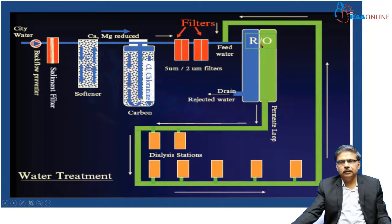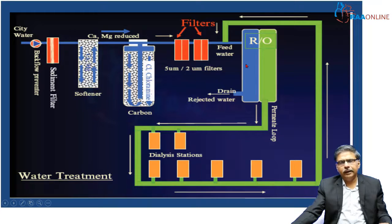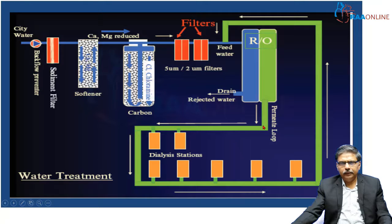There is also an RO membrane — a reverse osmosis membrane — which helps to get rid of all the biological impurities. The purified water then enters the dialysis unit. The water treatment plant can be inside the dialysis unit or kept at a higher level to generate enough pressure. Through the pipeline, the purified water runs like a loop, and the dialysis machines are all attached to this water treatment pipeline.